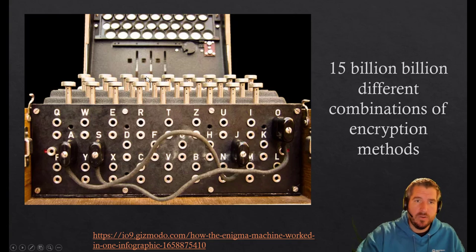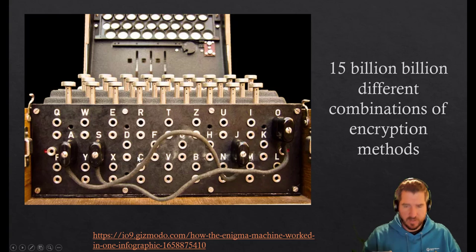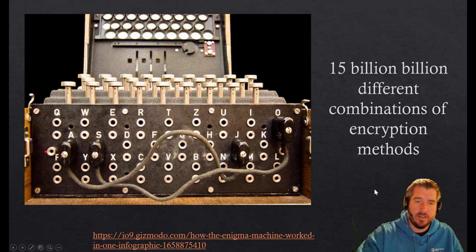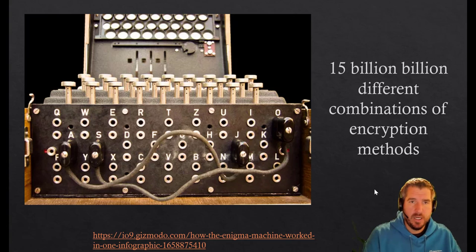There's actually 15 billion billion different combinations of encryption methods, so it was incredibly hard. You're going to watch two videos from the movie The Imitation Game about the way they actually cracked this code. But the Caesar cipher and the Enigma are both private key encryption.